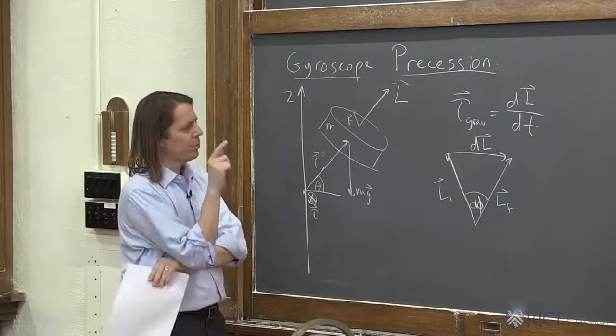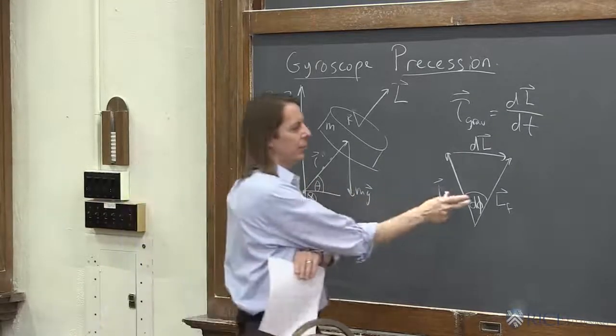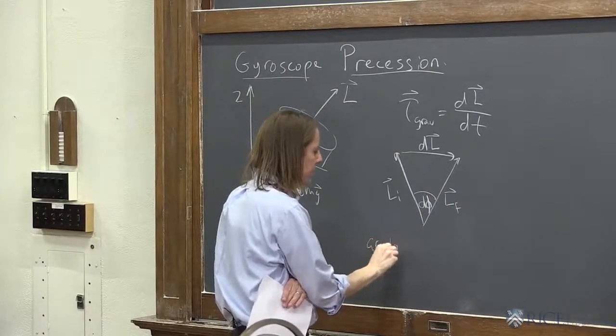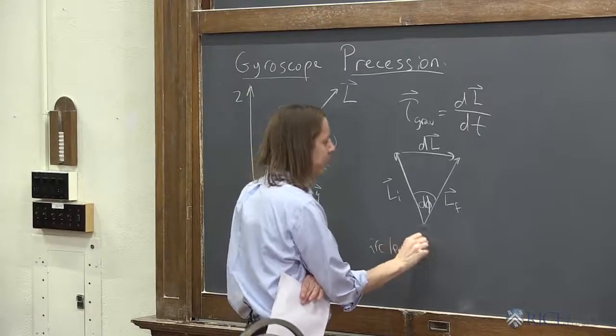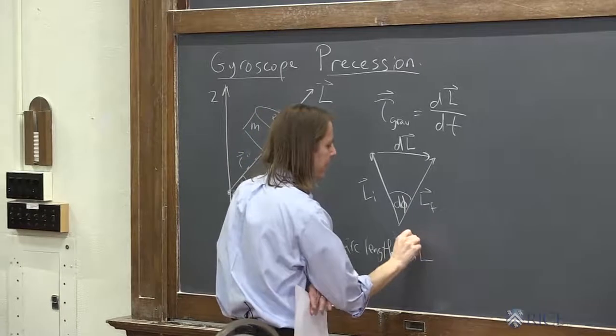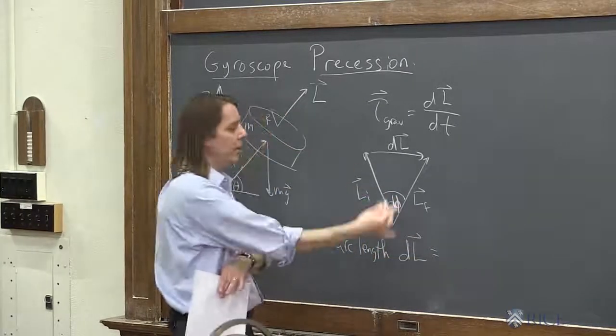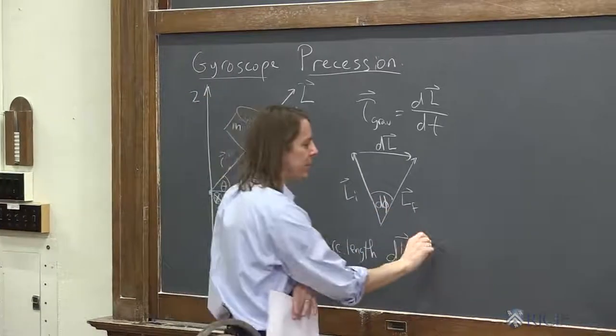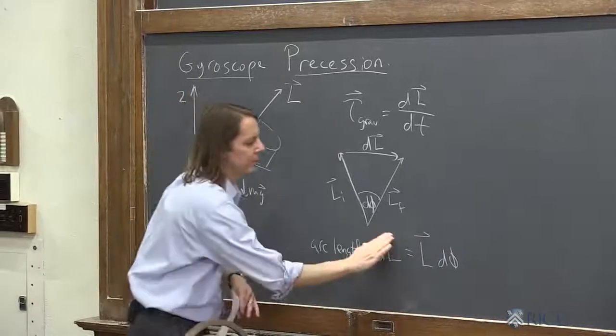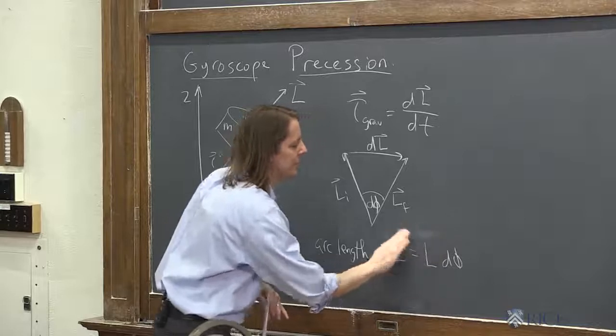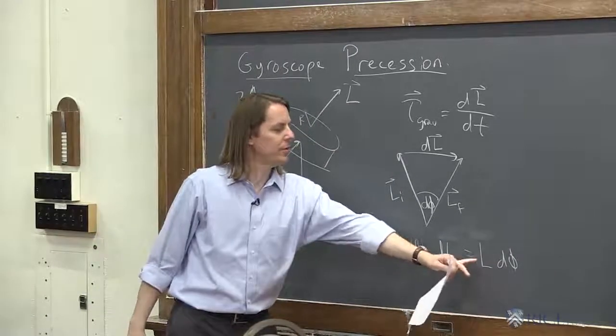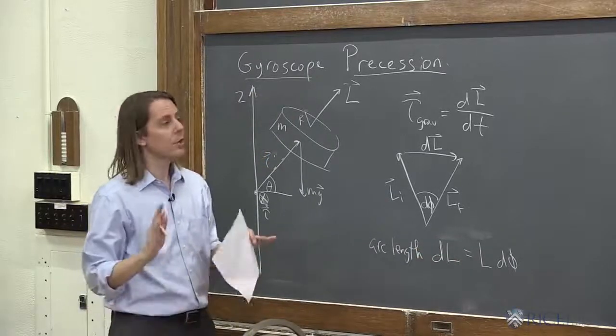And one other relationship we're going to need is for little small dphys and Ls, we can use the arc length to get a relationship among these. The arc length, in this case, the dL is like the arc length of this vector diagram. And it's equal to L, initial or final, it's constant, we'll just call it L, times d phi. Now we don't want vectors on there, it's magnitudes. So the length of the dL is just basically the radius of the circle L times the angle d phi.